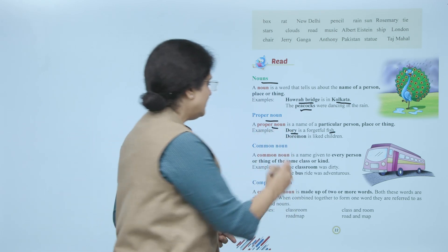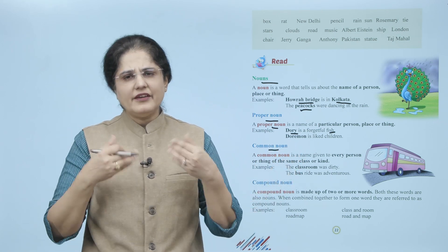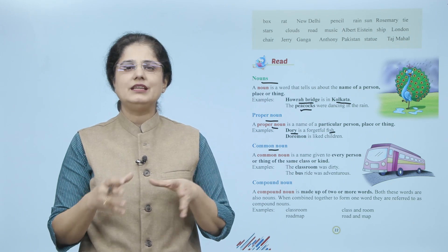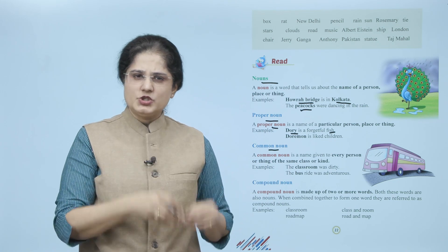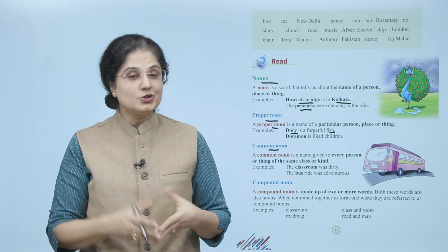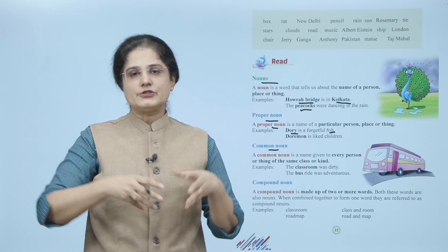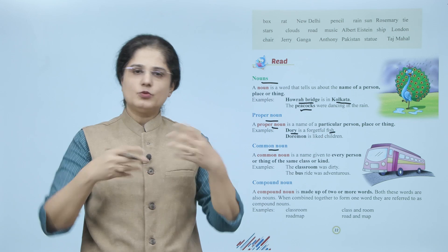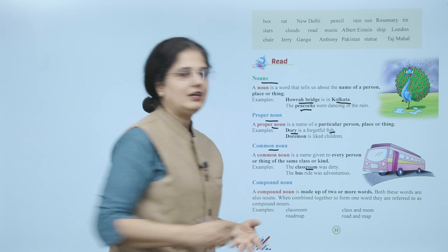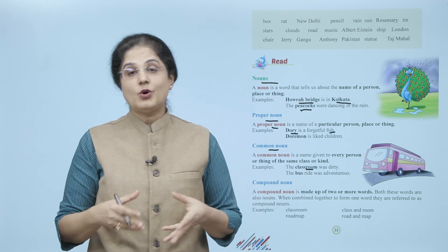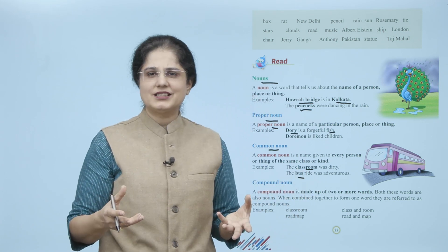Now let us look at the common noun. A common noun is a name given to every person or thing of the same class or kind. Matlab kisi bhi ek class ya ek jaisi koi bhi cheez ho ya log hoon, unka jo naam hota hai, usko hum kya kehte hain — common noun. For example: The classroom was dirty. Abhi classroom koi bhi ho sakti hai, to yeh hamaara common noun ho gaya. The bus ride was adventurous — koi khas bus nahi hai, koi bhi bus ho sakti hai, to yeh hamaara common noun hai.